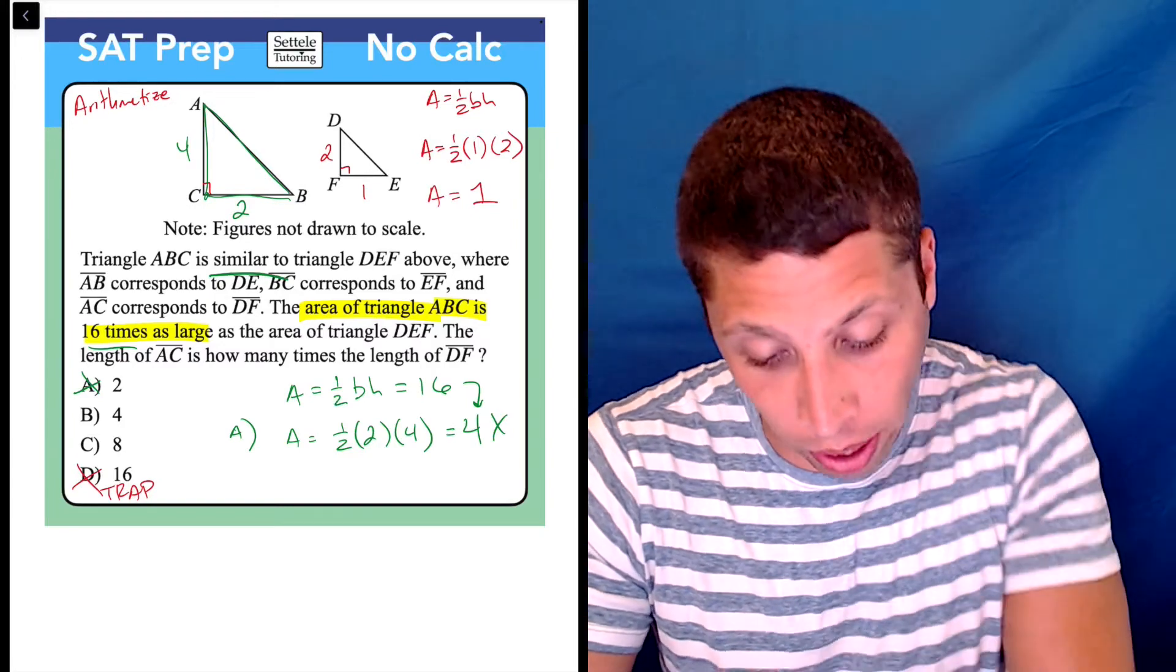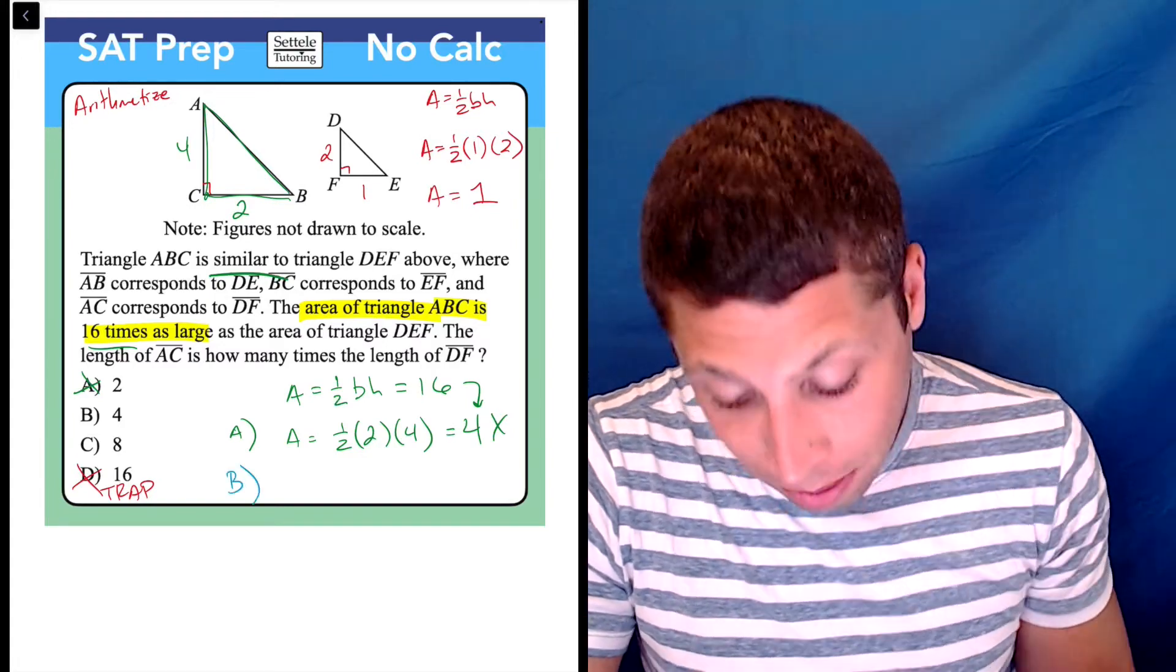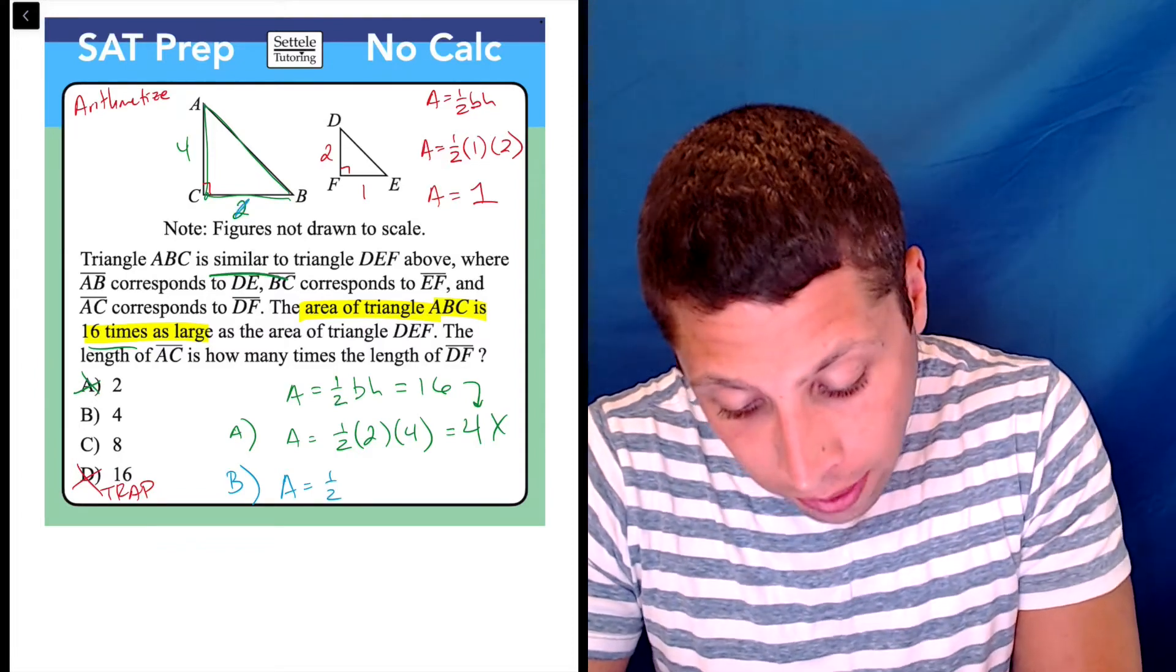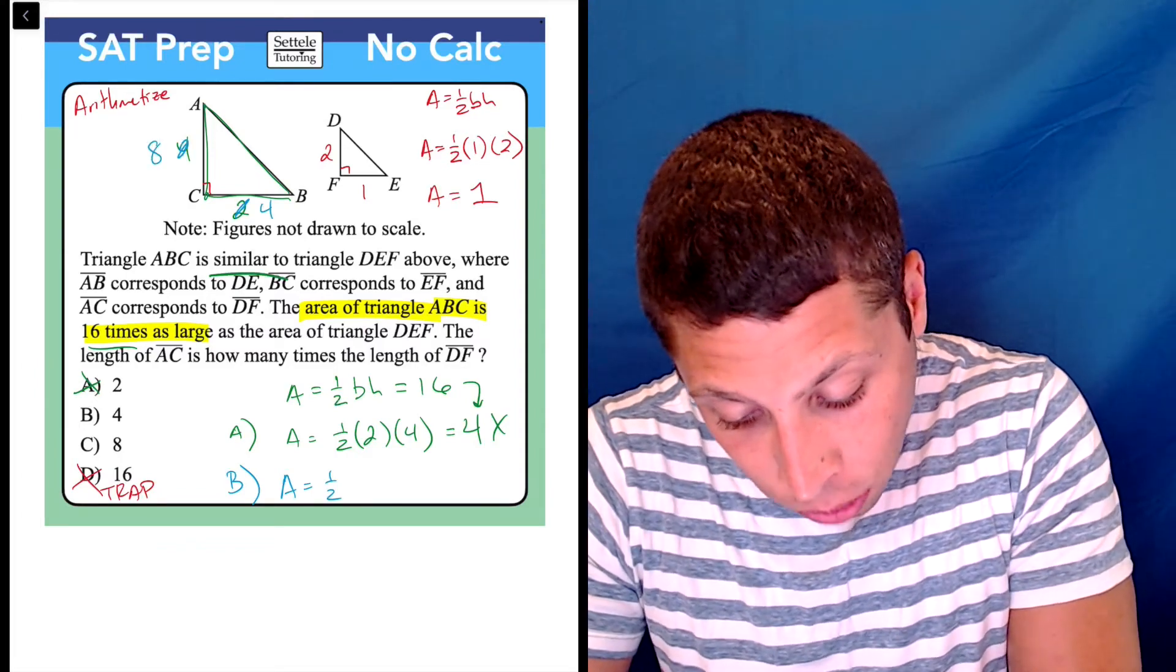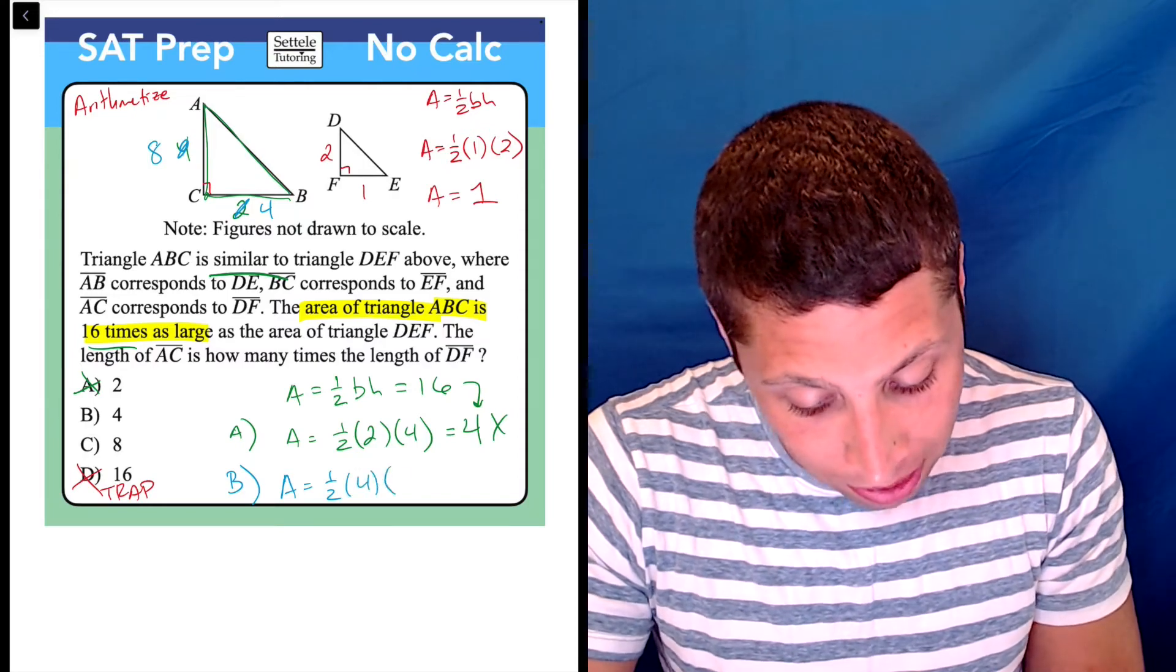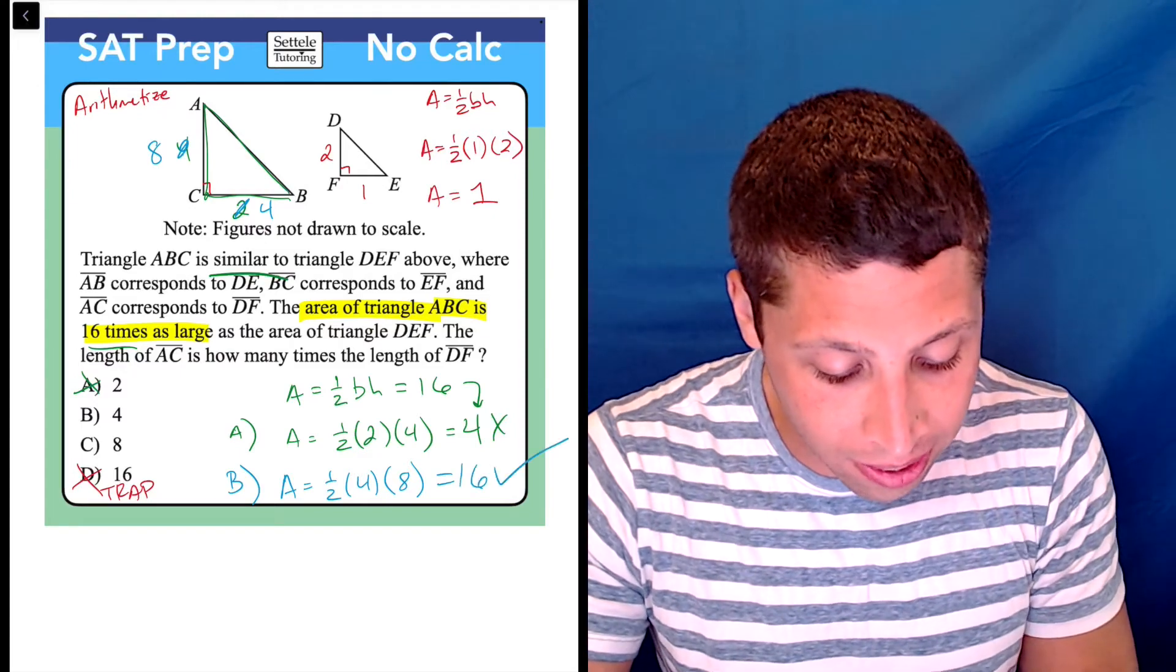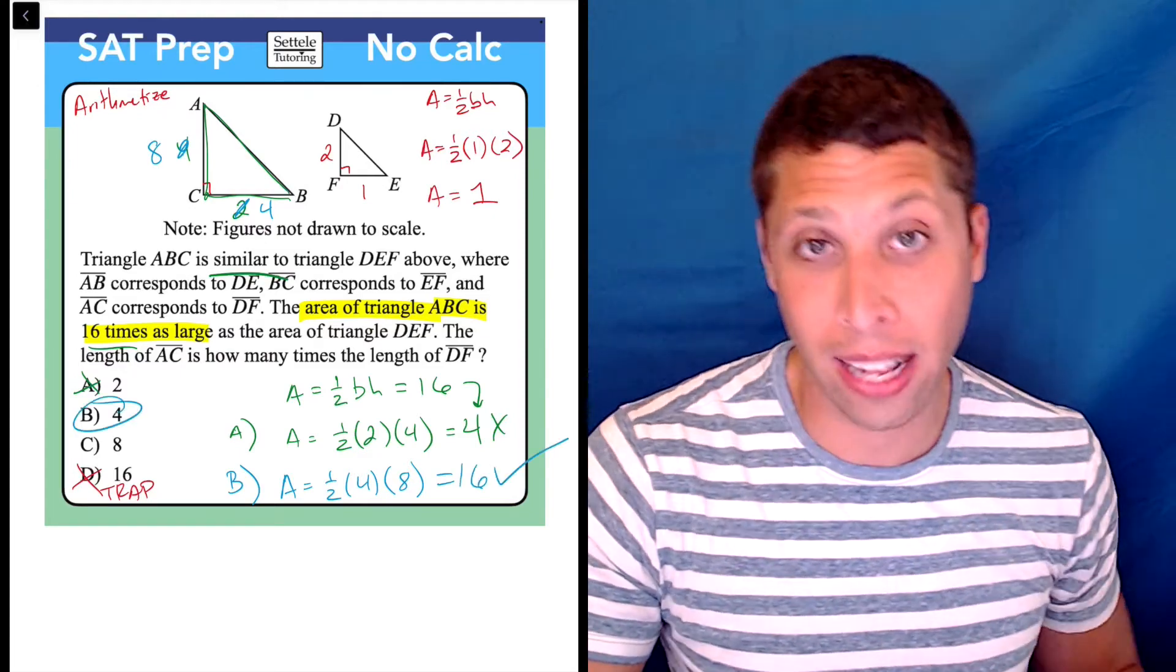Okay, let's try another choice, and so let's try choice B. If we had an area where everything was multiplied by four, then this would be four, and this would be eight. And so, okay, base of four, height of eight, half of four is two, two times eight is 16, bingo. That's the one.